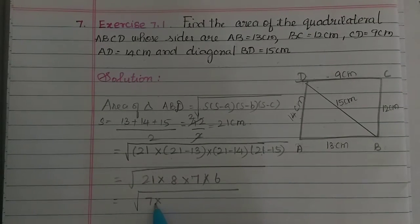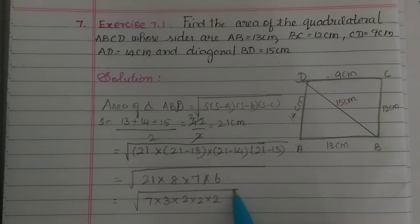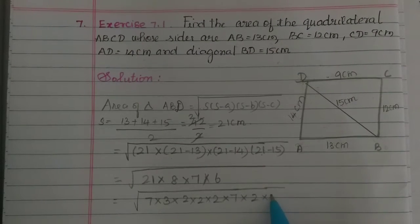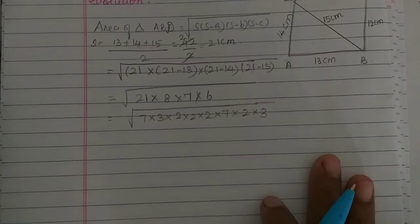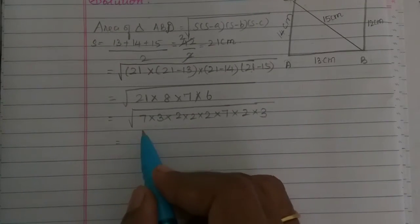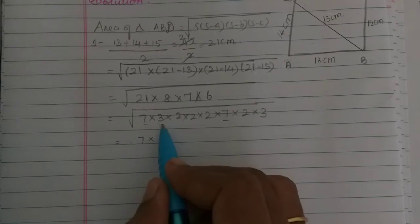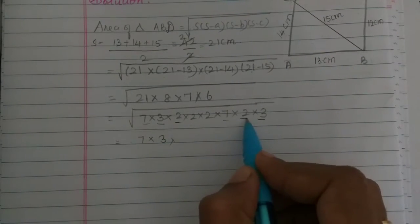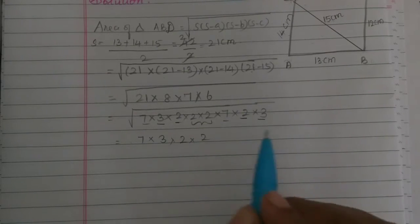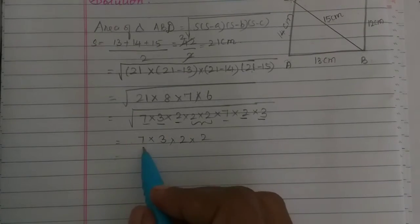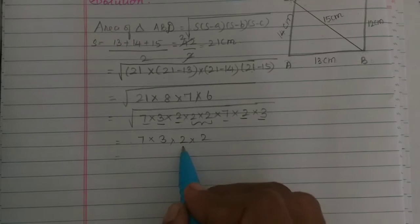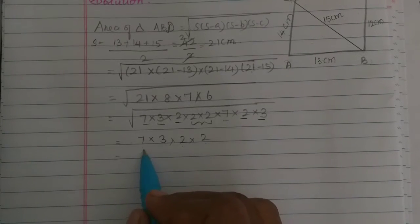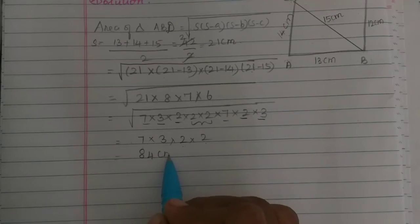Now we simplify: 21 is 7 times 3; 8 is 2 times 2 times 2; 7 is a prime number; and 6 is 2 times 3. Taking pairs under the square root: we get 7, then 3, then 2, giving us 7 times 3 times 2 equals 21 times 2 equals 42, and 42 times 2 equals 84. So the area of triangle ABD is 84 cm².